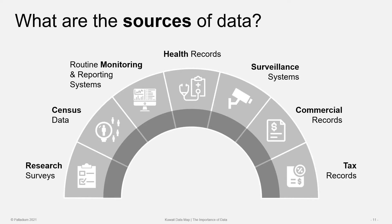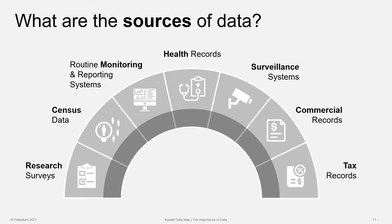Where does data come from? What are the sources of data? Well, it depends on the kind of data, and each type of data has its own particular sources. There's research data coming from clinical trials, studies, or surveys. Census data about the population, where it lives, and its characteristics. Surveillance data for things such as weather, crops, or diseases, helping us understand what's going on in real time. Routine monitoring and reporting systems for health, school systems, projects, or the economy, helping us understand where we are and where we might be headed. Individual health records and public health records. And commercial and financial data for firms and organizations.